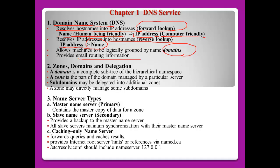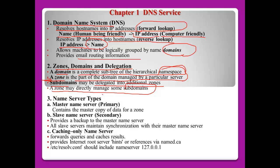In the DNS service, there are many kinds of terms we have to know. Three key ones are: zones, domains, and delegation. Domain means a distinct subtree of the DNS namespace — normally just a namespace. A zone is the part of the domain managed by a particular server. Subdomains may be delegated into additional zones, and each subdomain can be delegated by the main name servers.